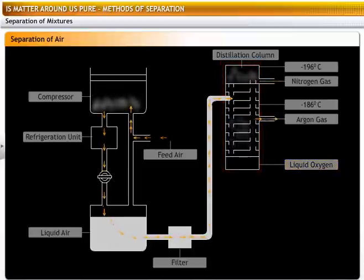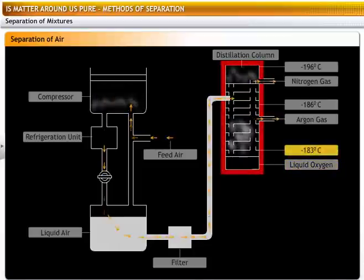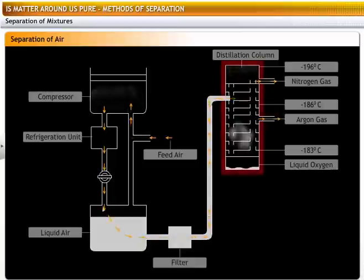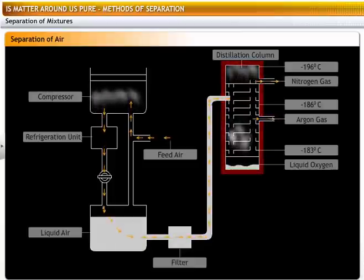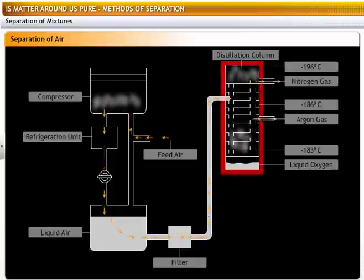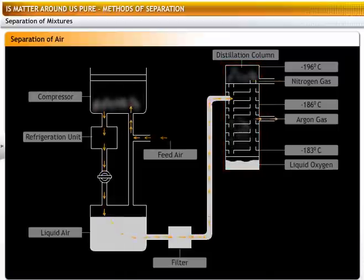Liquid oxygen has the highest boiling point of minus 183 degrees centigrade. It boils last. It collects as oxygen gas at the base of the fractional distillation column.